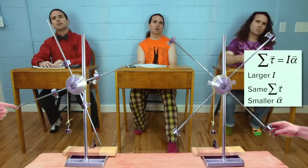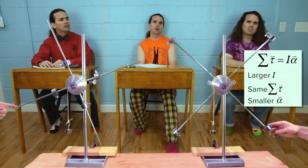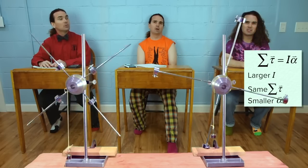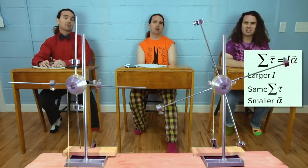Why are you making it so the four masses are always the same distance from the center?